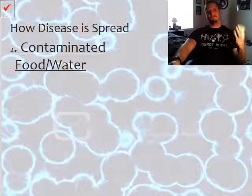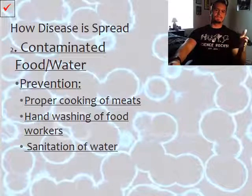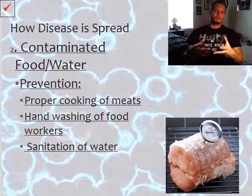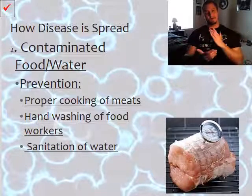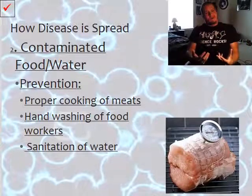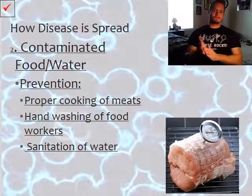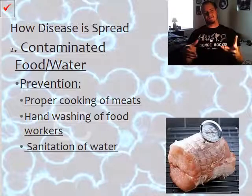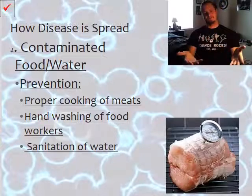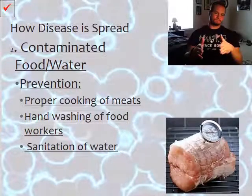The second way disease can spread is through contaminated food and water. Prevention includes proper cooking of food, hand washing by food workers, and sanitation of water. You want to make sure food is cooked thoroughly — inside meat there are a wide variety of pathogens that can cause food poisoning, and parasites that can lay eggs inside meat and survive if not heated to the proper temperature. If you're working with food, make sure you're washing your hands, as anything on your hands can be transferred to the food.